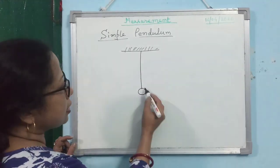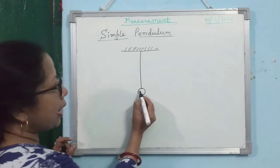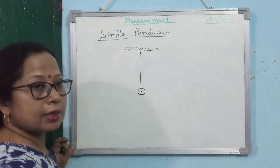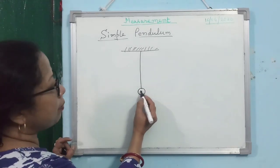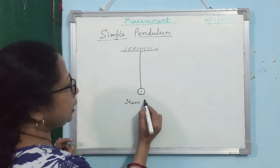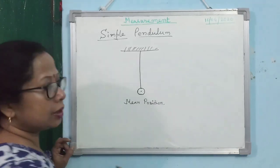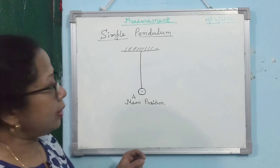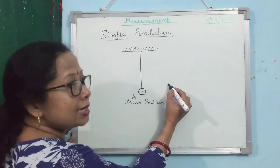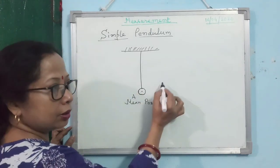When you consider the simple pendulum, this part is known as the pendulum bob. The center of the bob is the center of gravity of the pendulum, and this position of the pendulum is known as the mean position. What we generally do is take the pendulum here and then release it. When we release it, it has a to-and-fro motion.